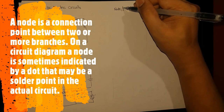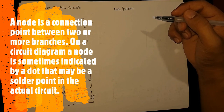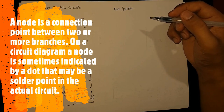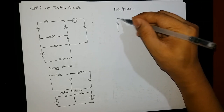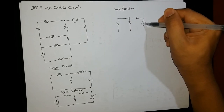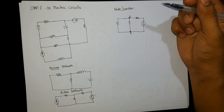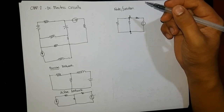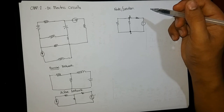Another term that will be used is the node, commonly referred to as a junction. A node or junction is defined as the connection point between two or more branches. In a circuit diagram, a node is sometimes indicated by a dot that may be a solder point in the actual circuit. For example, in this circuit, point A and point B are both considered junctions or nodes, simply because this is the interconnection of two or more wires.